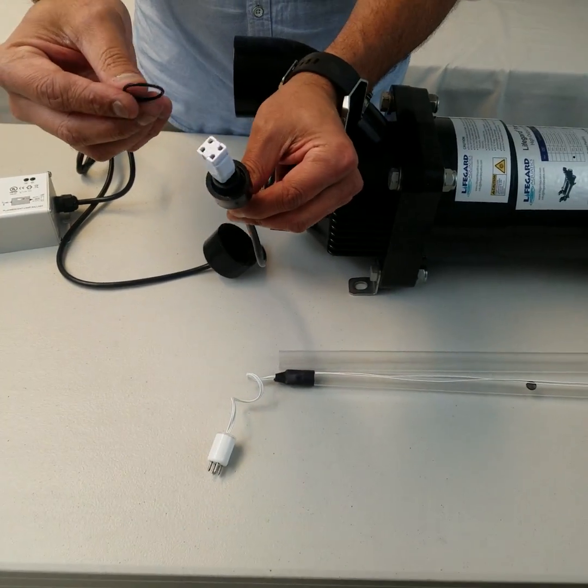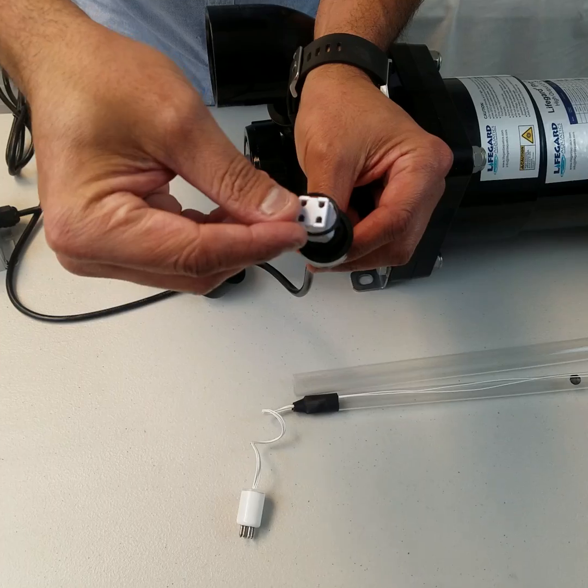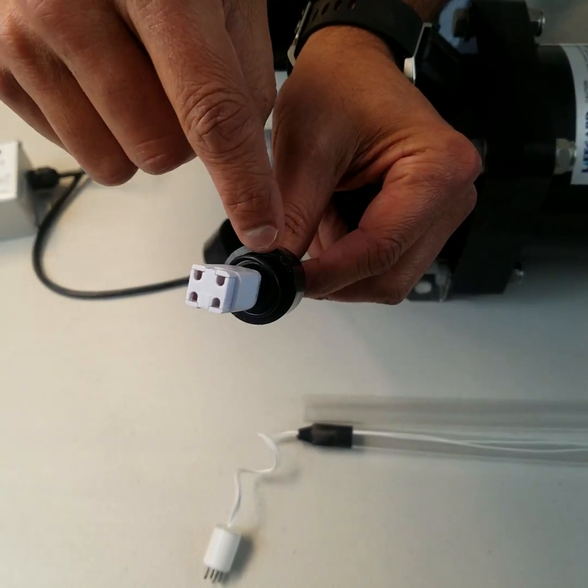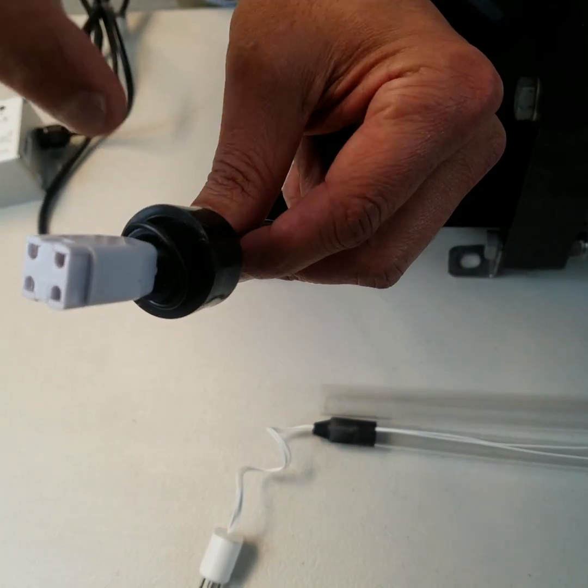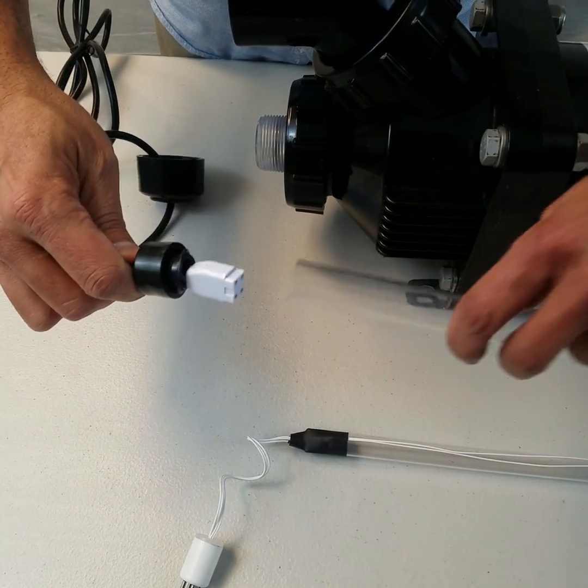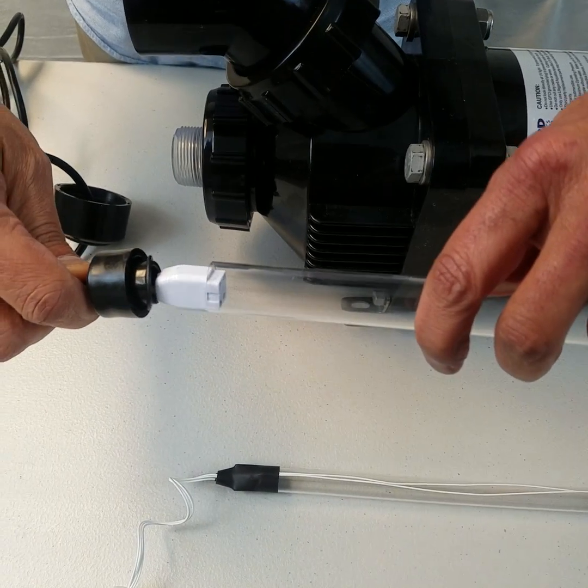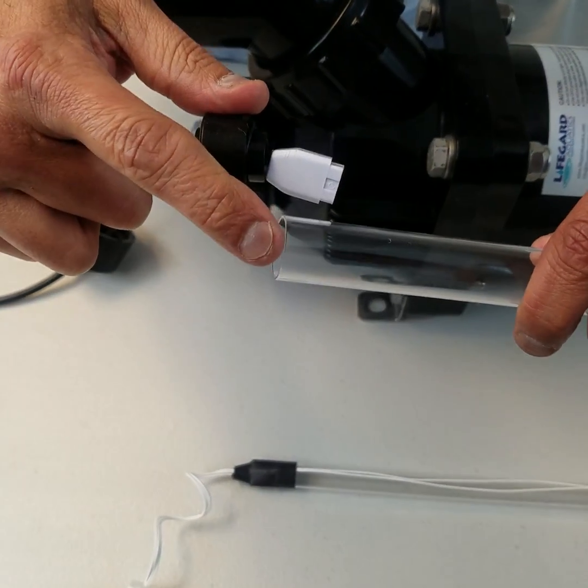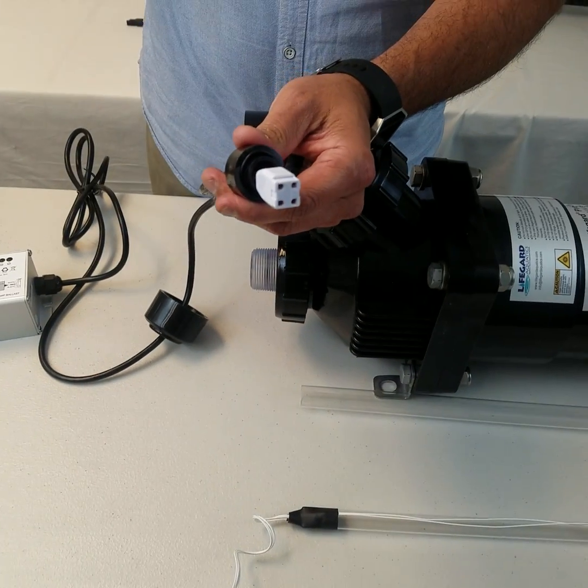The first thing you do: take the small o-ring, slide it through and put it in this gap right here that you see. It will slide in, and what it does is once the quartz sleeve goes in, it will seal the edges of the quartz sleeve from any moisture going in.